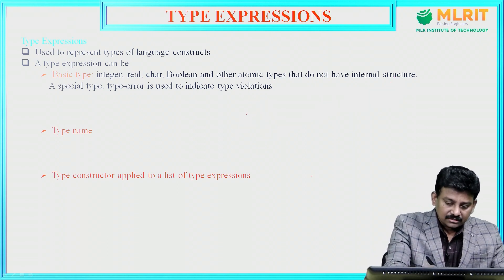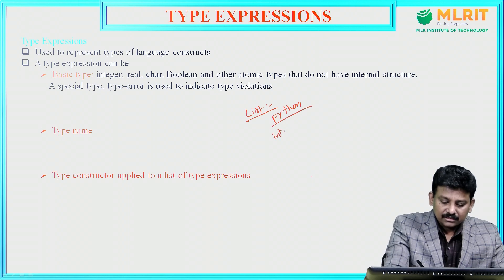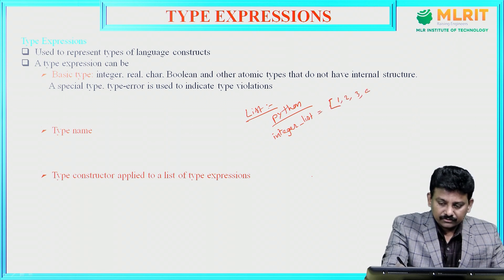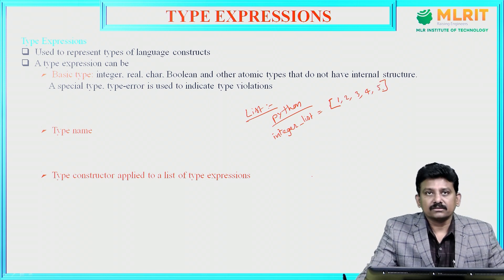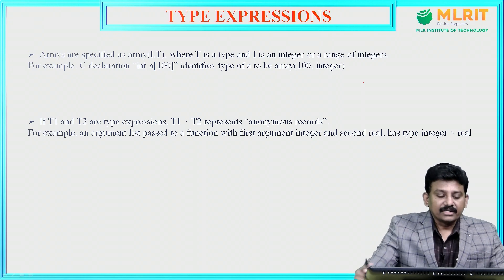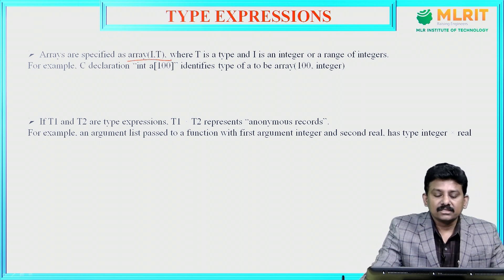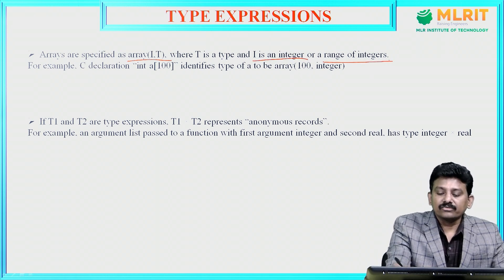Another type constructor is list. List is also a type constructor. In Python, we can create a list like this: integer_list = [1, 2, 3, 4, 5] — a list of five integer elements. Arrays are specified as array(i, t), where t is a type and i is an integer or a range of integers.